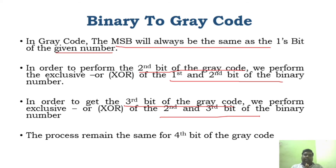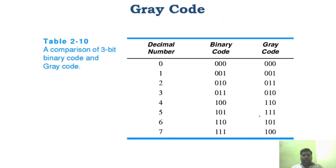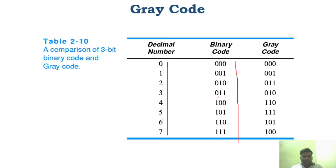Here you can see the decimal number and its binary code. In BCD we represent the 8-4-2-1 code: 000, 001, 010, 011, 100, 101, 110, 111. This is the normal binary code, and we are going to see how to represent this as grey code.